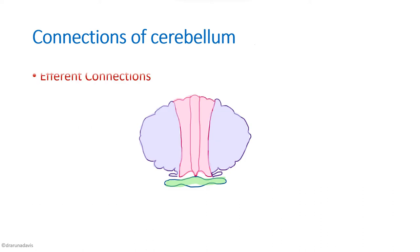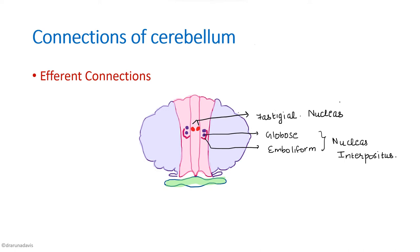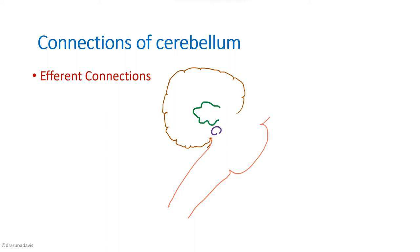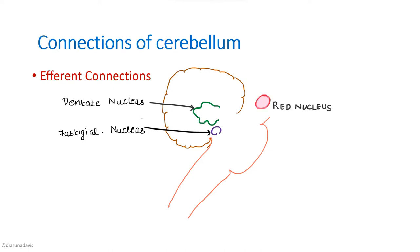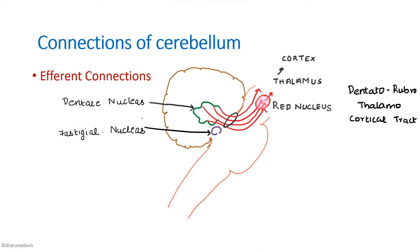The efferent connections of the cerebellum arise mainly from the deep cerebellar nuclei. In the vermis region we have the fastigial nucleus. In the paravermal region we have the globose and emboliform nuclei, together called the nucleus interpositus. In the cerebrocerebellum we have the dentate nucleus. From the dentate nucleus, output fibers pass through the red nucleus and then to the thalamus and cortex, forming the dentatorubrothalamocortical tract.